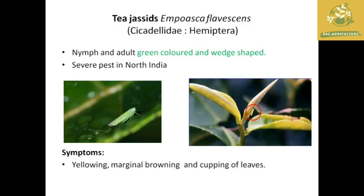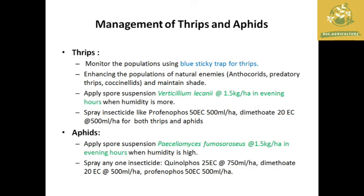The next pest is the tea jassid, which belongs to the sucking insect family Hemiptera. Both nymph and adult suck plant sap; they are green in color and wedge-shaped. The symptom is yellowing, marginal browning, and curling of leaves. Management for thrips includes placing blue sticky traps for monitoring and applying Verticillium lecanii under high humidity, and spraying insecticides like profenofos or dimethoate. For aphids, apply spore suspensions of Beauveria bassiana or Fusarium at 1.5 kg per hectare in evening hours under high humidity, or insecticides like quinalphos, dimethoate, or profenofos at the recommended dosage.